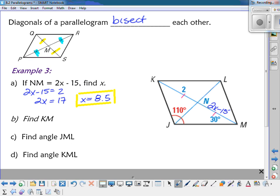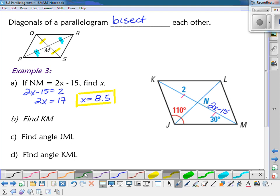Then for part b, we're going to find the measure of KM. Well, that's just the two sides added together. 2 plus 2. KM is going to equal 4.